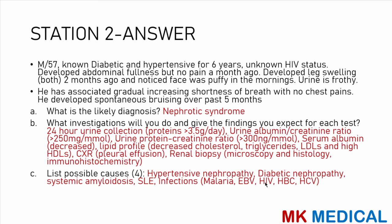Investigations and expected findings: a 24-hour urine collection would show more than 3.5 grams of protein per day. A urine albumin-creatinine ratio greater than 250 mg/mmol is more specific for proteinuria. Urine protein-creatinine ratio greater than 300 nanograms per millimole. Serum albumin may be decreased. Lipid profile may show increased cholesterol, increased triglycerides, increased LDLs and low HDLs. A renal biopsy for microscopy, histology, and immunohistochemistry may identify the subtype. A full blood count may show derangements in platelet count.